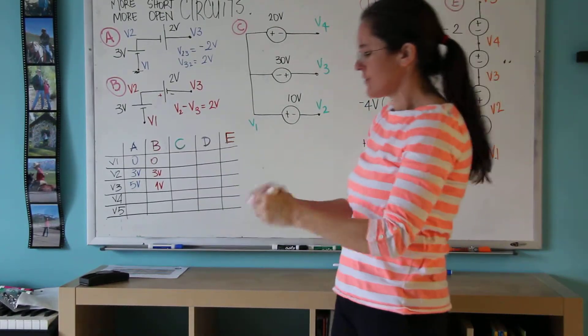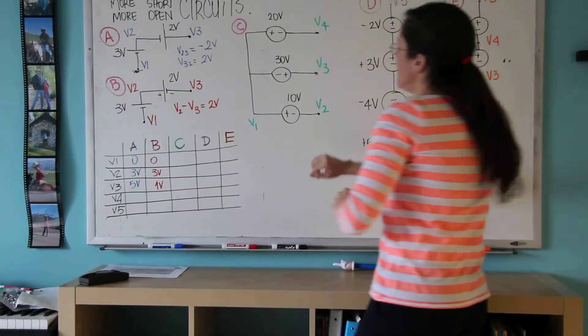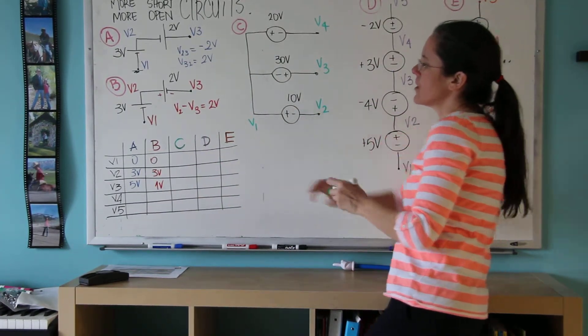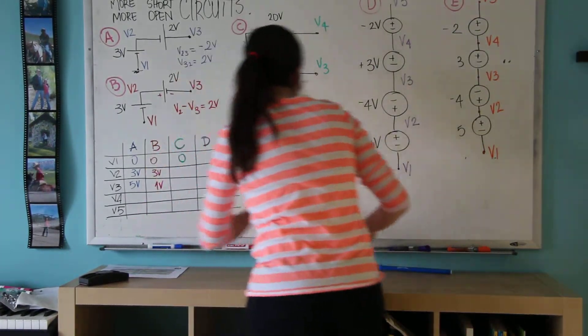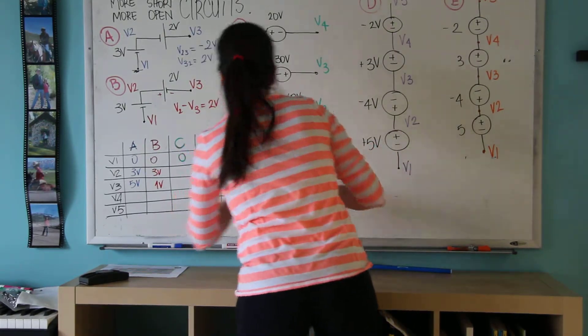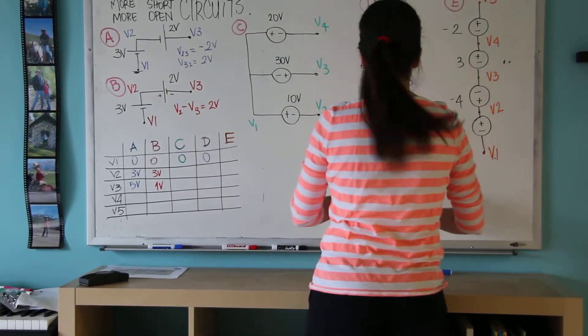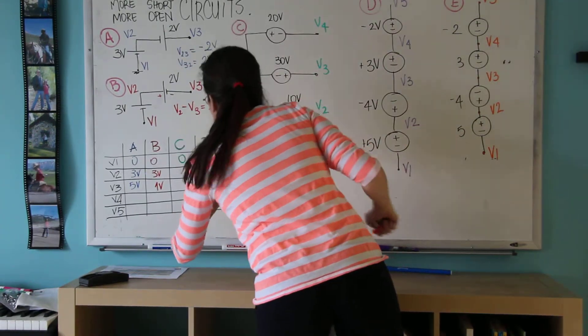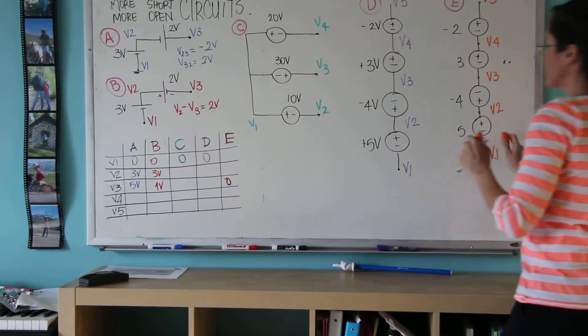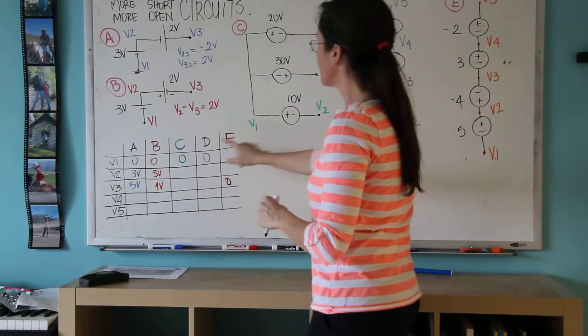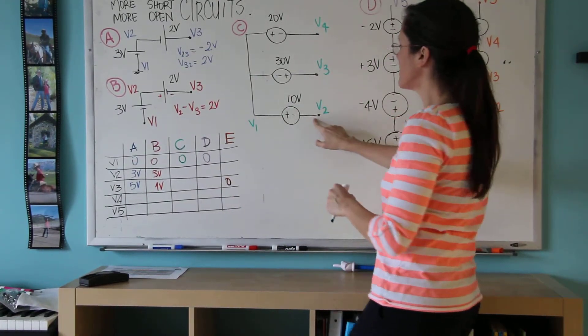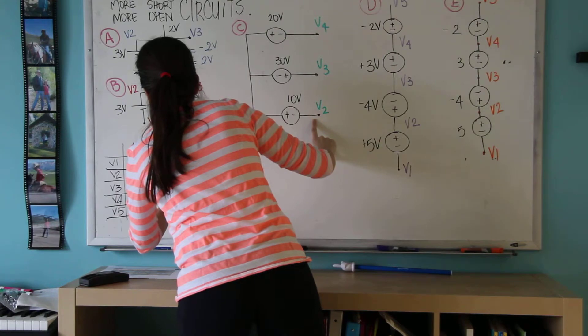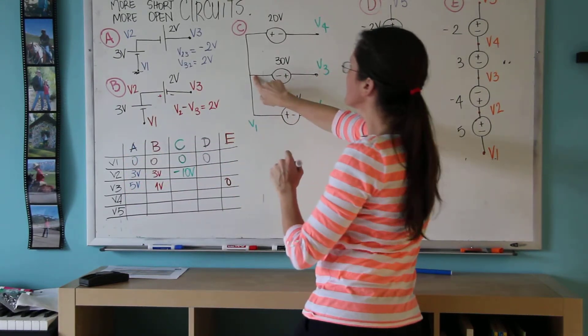Let's go to the third circuit. I'm going to again call V1 my 0. Actually, to make things simple, I'm going to call 0 on V1 in all my circuits except for E, where I'm going to call V3 zero. So this guy is 0. Therefore, this V2 is minus 10.